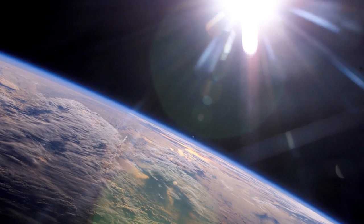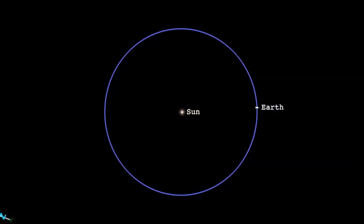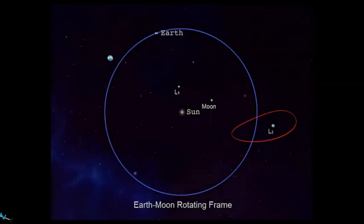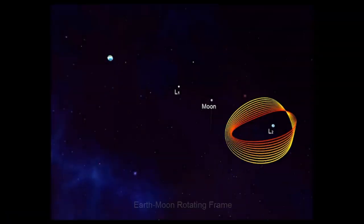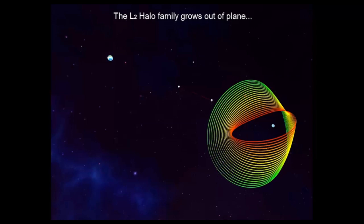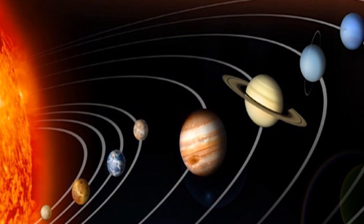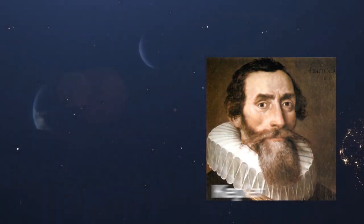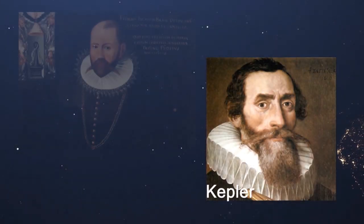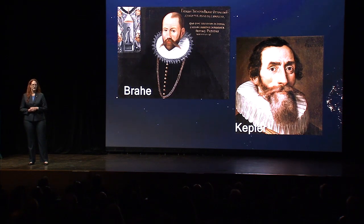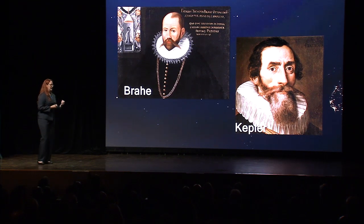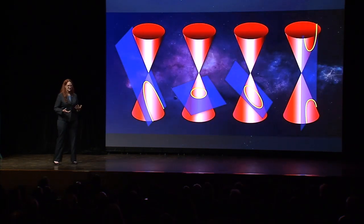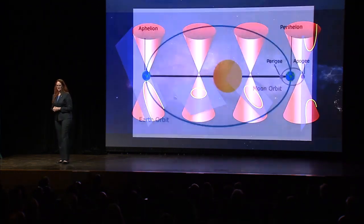Merriam-Webster defines an orbit as the path described by one body in its revolution about another, like the Earth going around the Sun, or in the case of this talk, a spacecraft going around a gravitational body or two. Now we enter the world of rocket science. Johannes Kepler, with the help from volumes and volumes of data on planetary motion captured by Tycho Brahe, calculated that the paths these orbits took in the presence of a gravitational field followed conic shapes like circles or nearly circular ellipses.